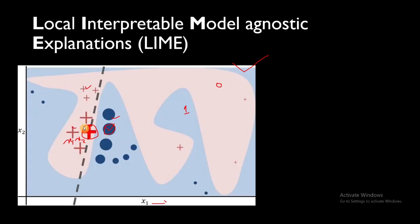The first step is LIME perturbs the actual sample you want to explain and generates multiple perturbed samples. It then processes those perturbed samples through the black box model and generates predictions. According to those predictions, it creates a simple linear model.